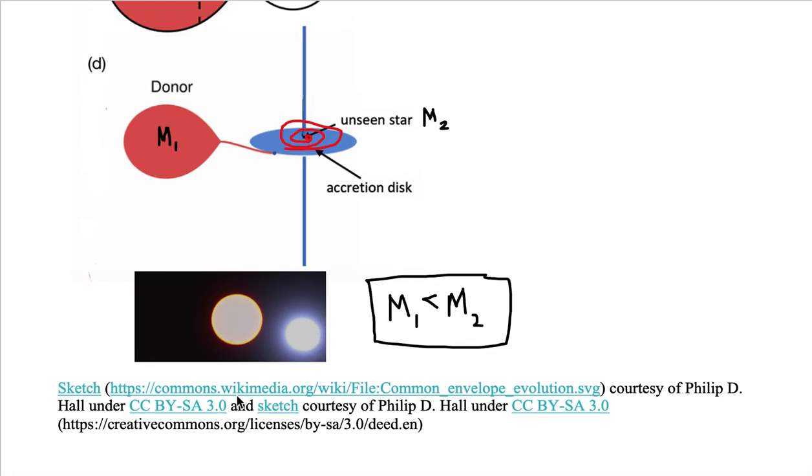On the left is how we find Algol systems. We see two stars that are in a close binary in the sky. Notice we don't generally see an accretion disk. We just find two stars. Either accretion has turned off completely, or it is weak.